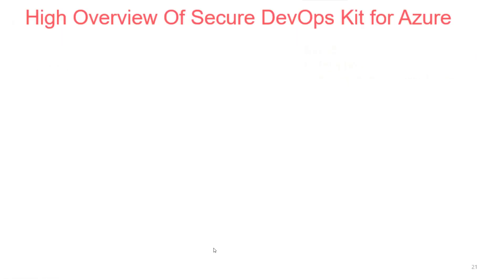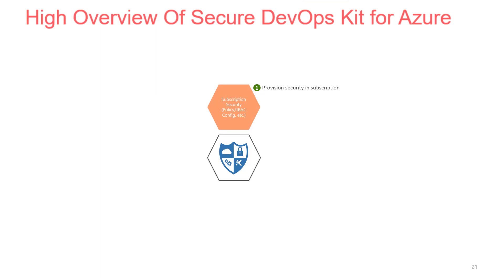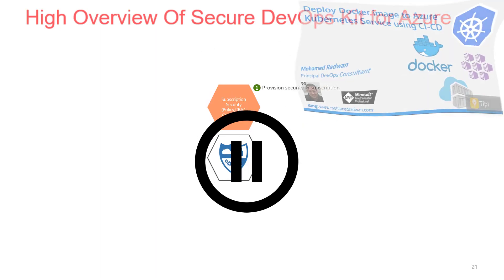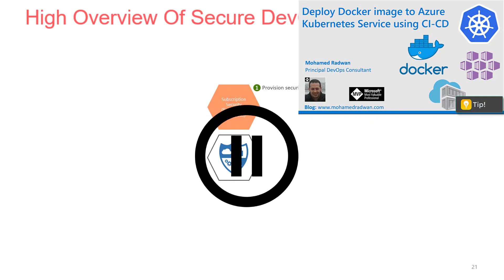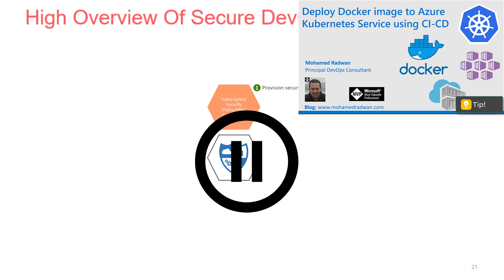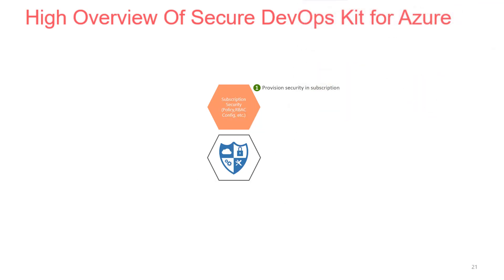Secure DevOps Kit for Azure was developed internally inside Microsoft and shared with their customers. It is open source on GitHub and is a group of PowerShell commandlets, extensions, plugins, guidelines, and security best practices. It can help secure a subscription for policies, role-based access control, configuration, and more. It also provides security intelligence for coding as well as ad hoc security verification tests.